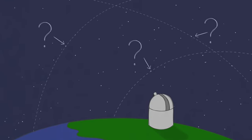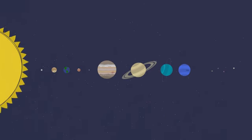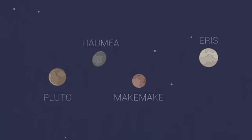There may be dozens of dwarf planets in our solar system. So far, we've classified just a handful, most of them very far away.